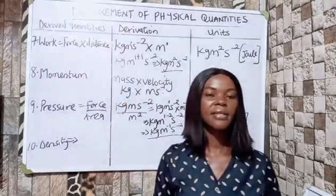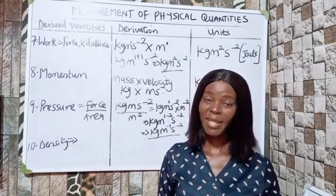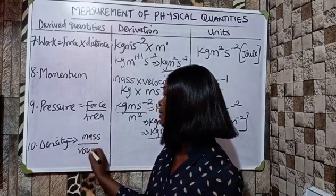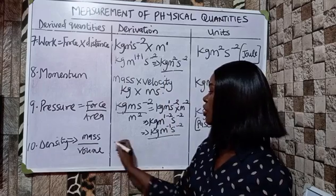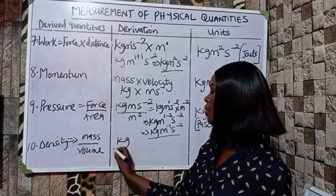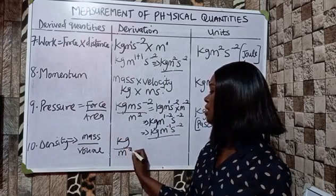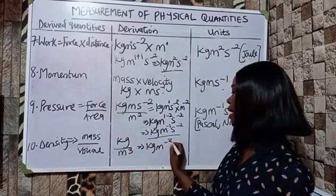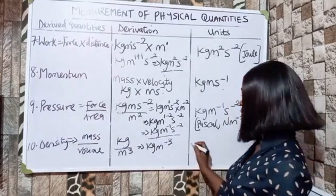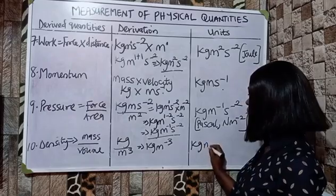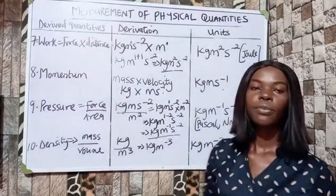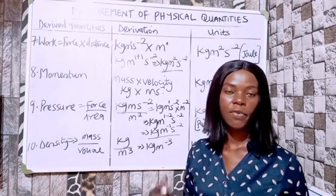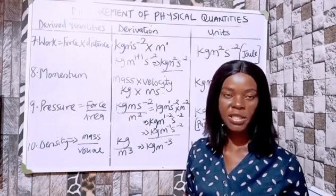Density is defined as mass per unit volume — mass over volume. The unit of mass is kilogram and volume is meter cubed. The unit of density becomes kilogram per meter cubed: kg·m⁻³. This is how we obtain the derived units of physical quantities.